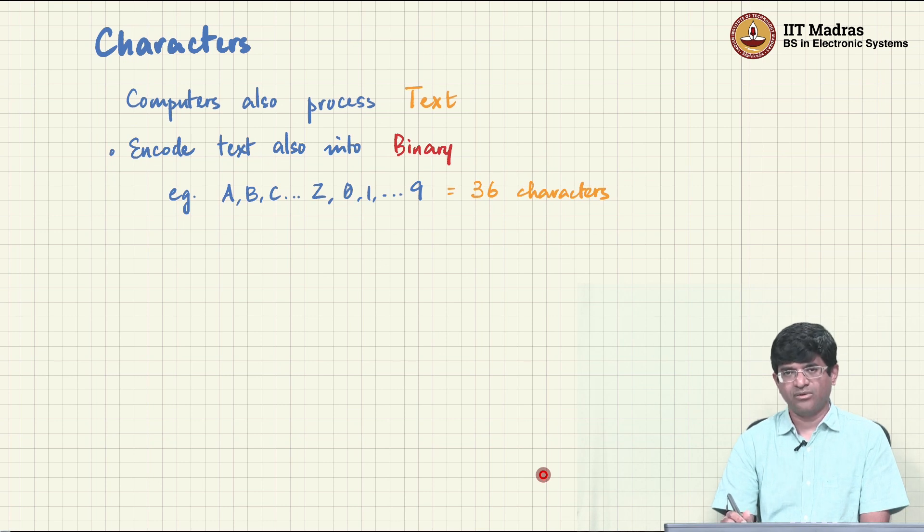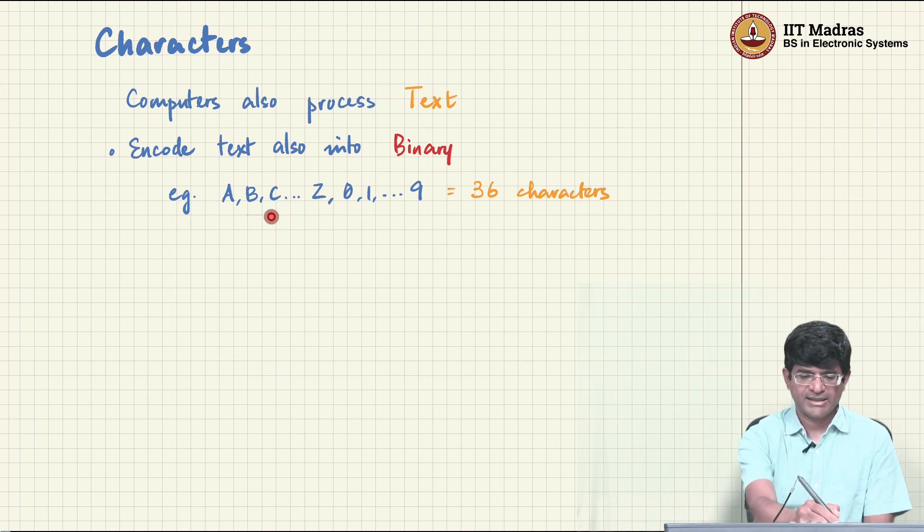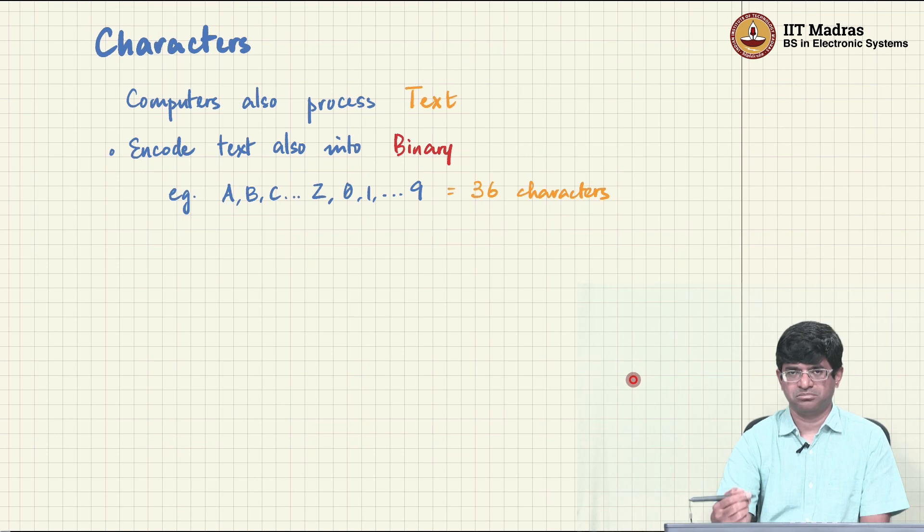Now what we can do is take text and also encode that into binary because after all these are also symbols. An example would be that we could just say that all the letters in the alphabet A, B, C up to Z and the digits 0, 1 up to 9, we will take all of them and treat them as symbols that need to get encoded.